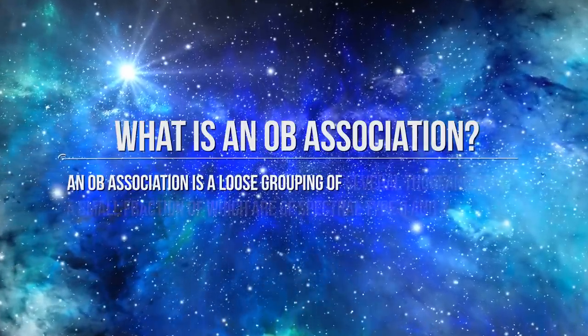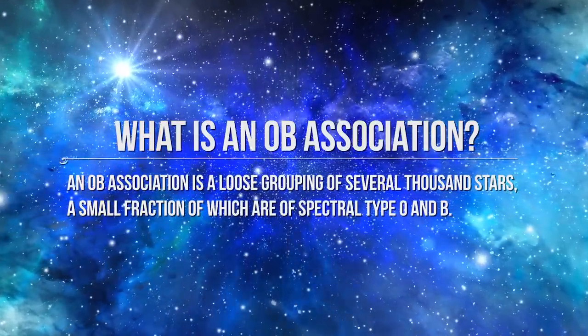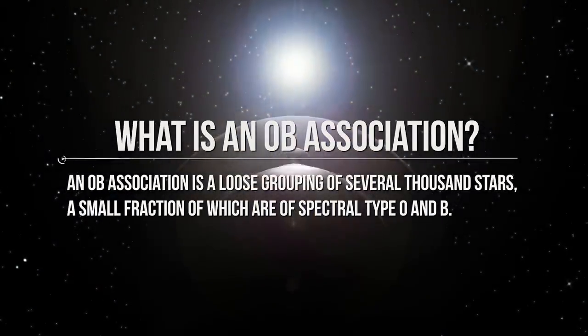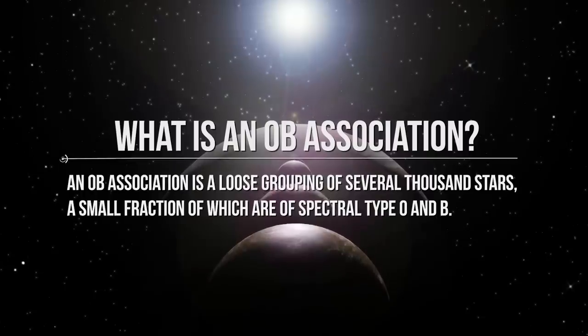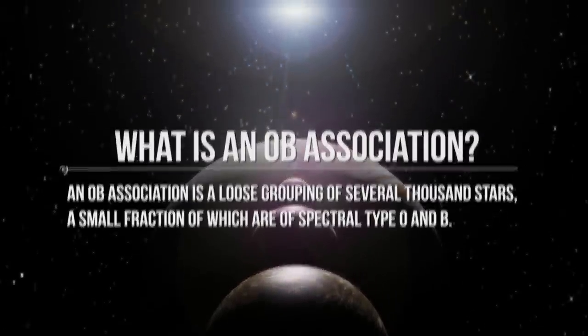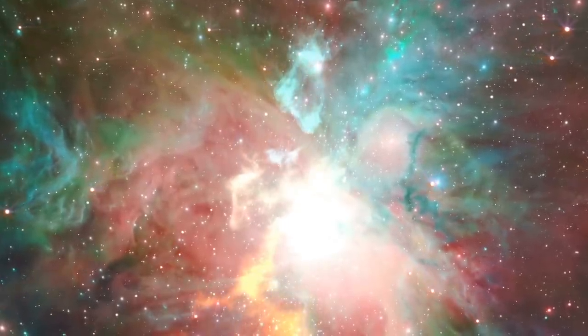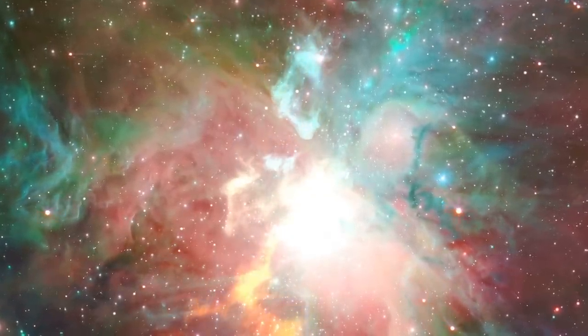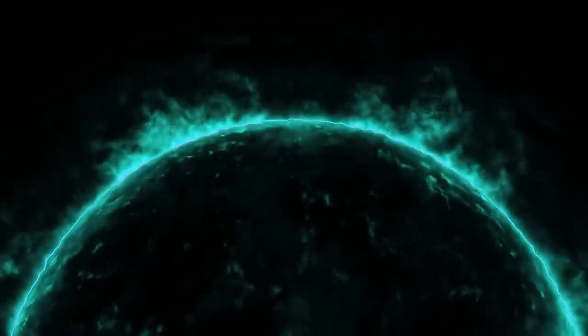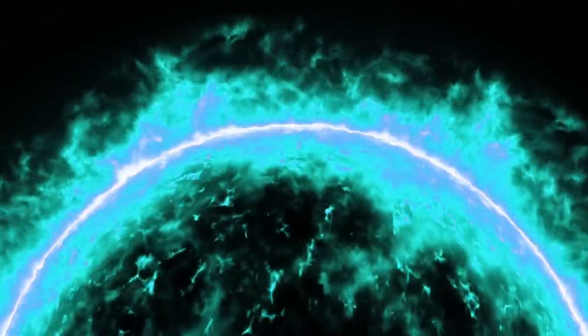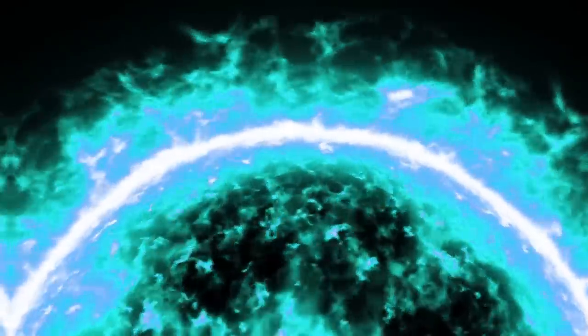Now, the question here is what is an O-B association? An O-B association is a loose grouping of several thousand stars, a small fraction of which are spectral type O and B. B-type stars also produce B-type spectrum and is also detected in O- and A-shell stars. B-stars are a heterogeneous set of stars with B-spectral types and emission lines. According to the research, it was found that they can have a disk that can create emission lines. They are considered to be main sequence stars, but a number of sub-giants and giant stars are also included.